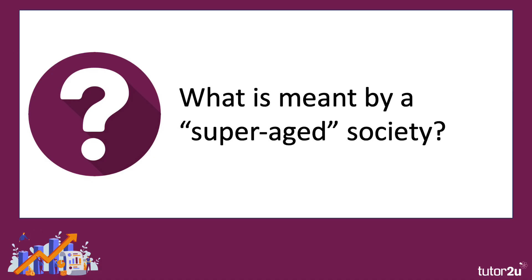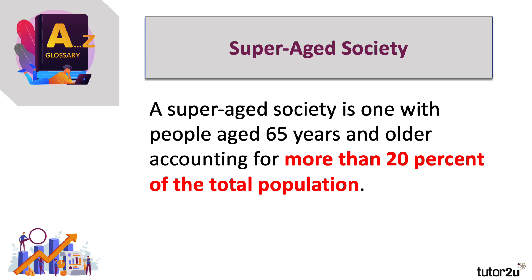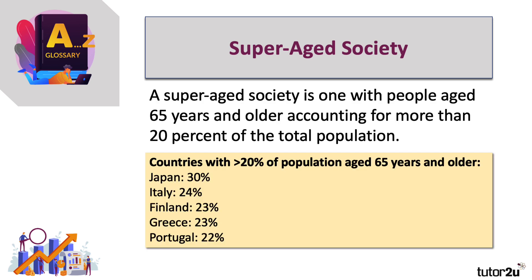There's another concept we might bring into the discussion: the super-aged society. A super-aged society is one with people aged 65 years and older accounting for more than one-fifth, or 20%, of the total population. Here are examples of countries with a super-aged society: Japan at 30%, Italy at 24%, Finland, Greece and Portugal. Those club-med countries — Spain, Greece and Portugal — have a very high level of people aged more than 65 as a percentage of the total population.